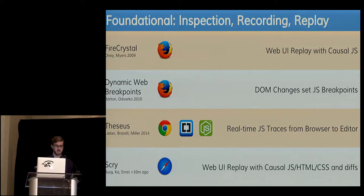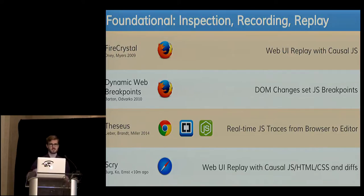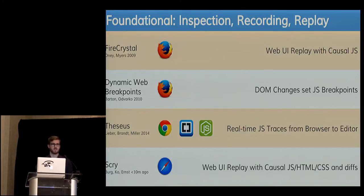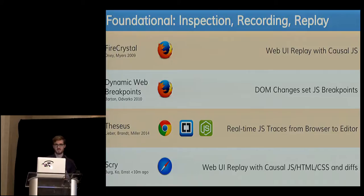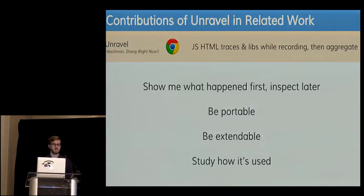Theseus, in 2014, gave us real-time event traces from the browser through live instrumentation. As you're doing something in the browser, you can see it in context with your IDE — brackets in this case — with live traces happening. We also just heard about Scry, giving us replay and a hint of causal JavaScript, HTML, and CSS, as well as diffs between program states. So how does Unravel fit into this work?